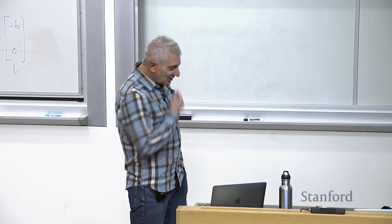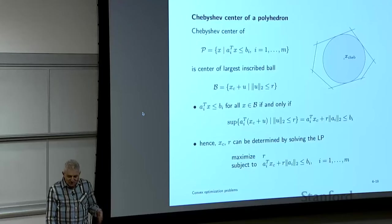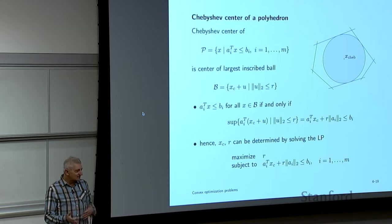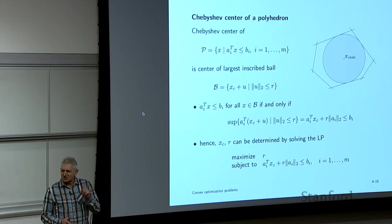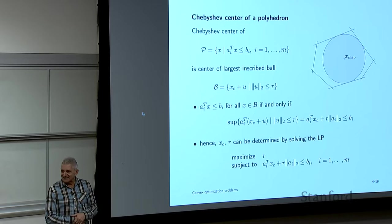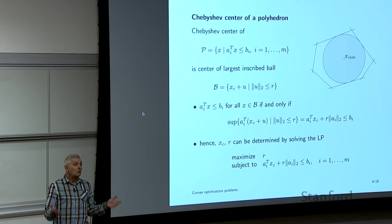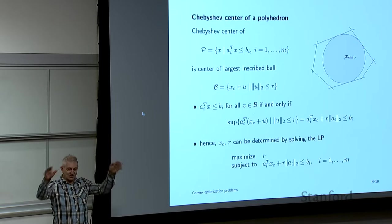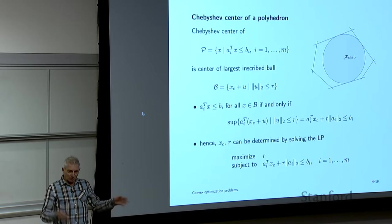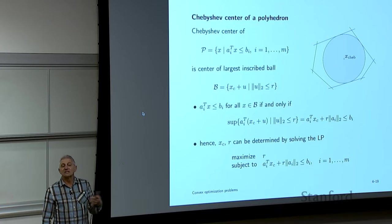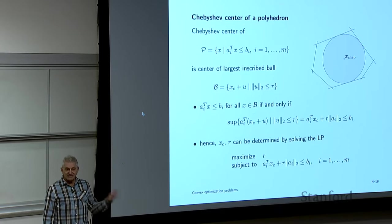Another LP example: finding a point that's deep inside a set — a center. We already encountered the yield center. Another notion is the Chebyshev center: given a polyhedron described by linear inequalities, find the largest inscribed ball — the largest ball that fits inside the polyhedron.